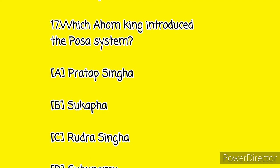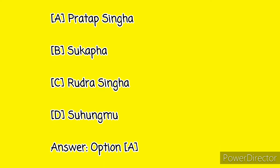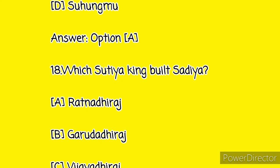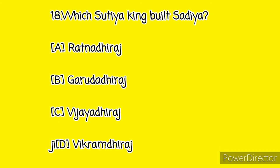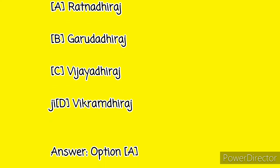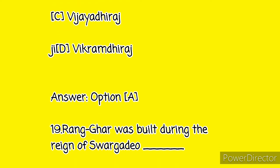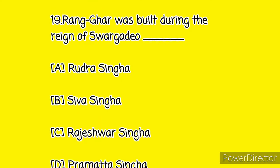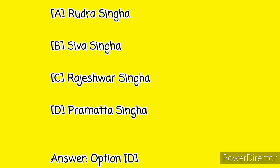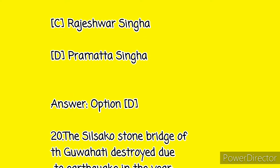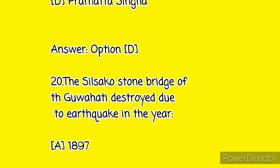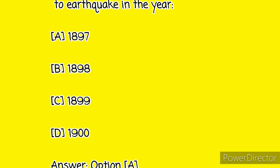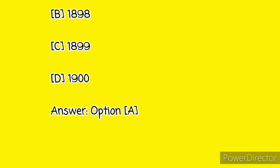Question number nineteen: which Ahom king introduced the postal system? Option A: Pratap Singha. Next question: which Sutia king built the temple? Option A: Ratna Dhirash, Option B: Guru Dhirash, Option C: Vijaya Dhirash, and Option D: Bikram Dhirash. And here the answer is Option A. Question number nineteen: Ranghar was built during the reign of — Option A: Rudra Singha, Option B: Subha Singha, Option C: Raja Singha. Our last question: the Silsaku stone bridge at Guwahati was destroyed due to an earthquake in the year — Option A: 1897, Option B: 1898, Option C: 1899, Option D: 1900. And here the answer is Option A.